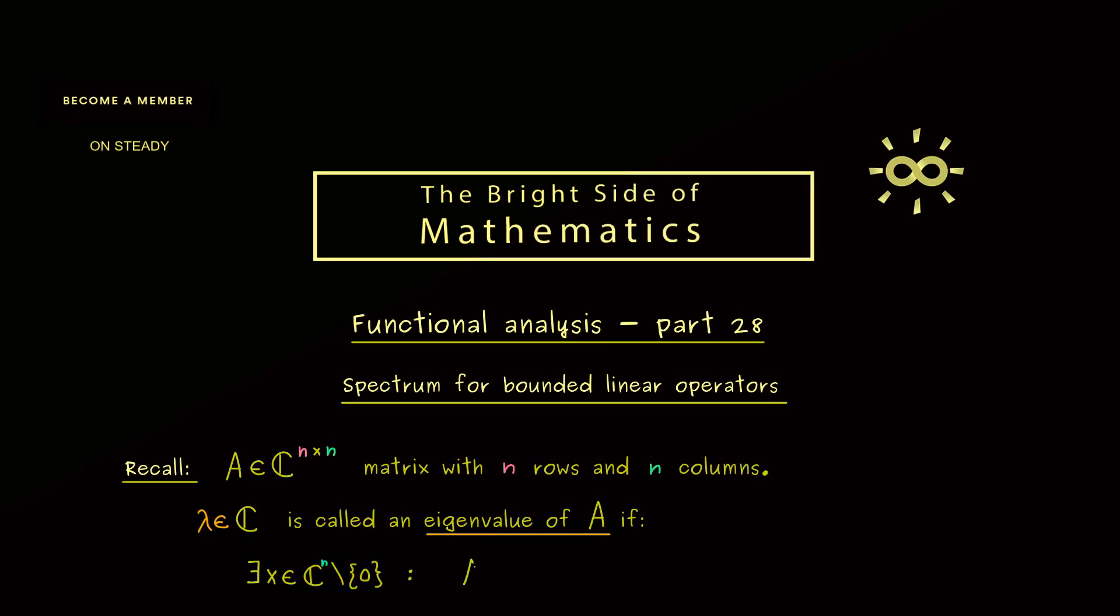And it fulfills that Ax is equal to λx. Or in other words, the matrix multiplication for this vector x is reduced to a scalar multiplication.